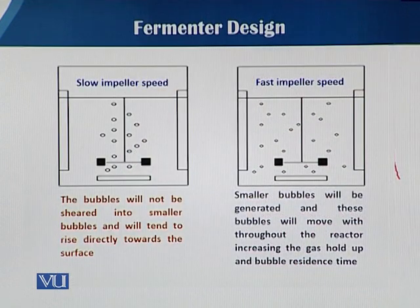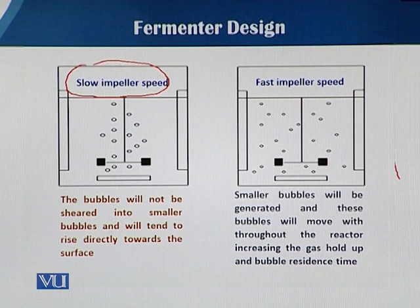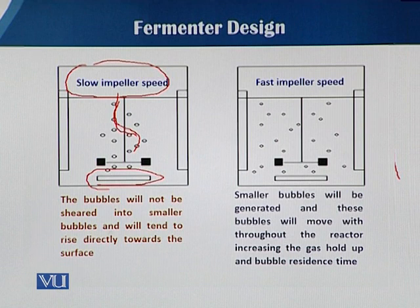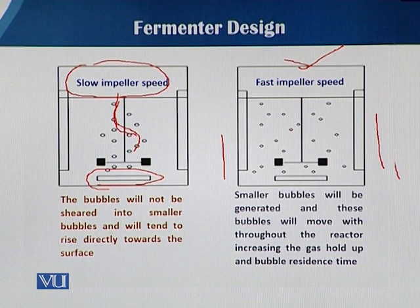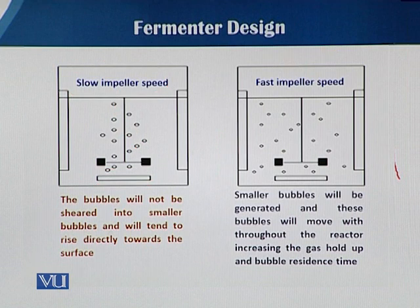If the impeller speed is very slow, the air bubbles that exit and ooze out from the spargers just pass through and have less time to retain inside the fermentation medium. But when the impeller speed is very high, it facilitates equal and proper distribution of the air bubbles, so each bubble has maximum retaining time in the fermentation medium. When there is less retention time, there is less chance of oxygen solubility, but when the bubble is retained longer, there is more chance of oxygen solubility inside the fermentation medium.